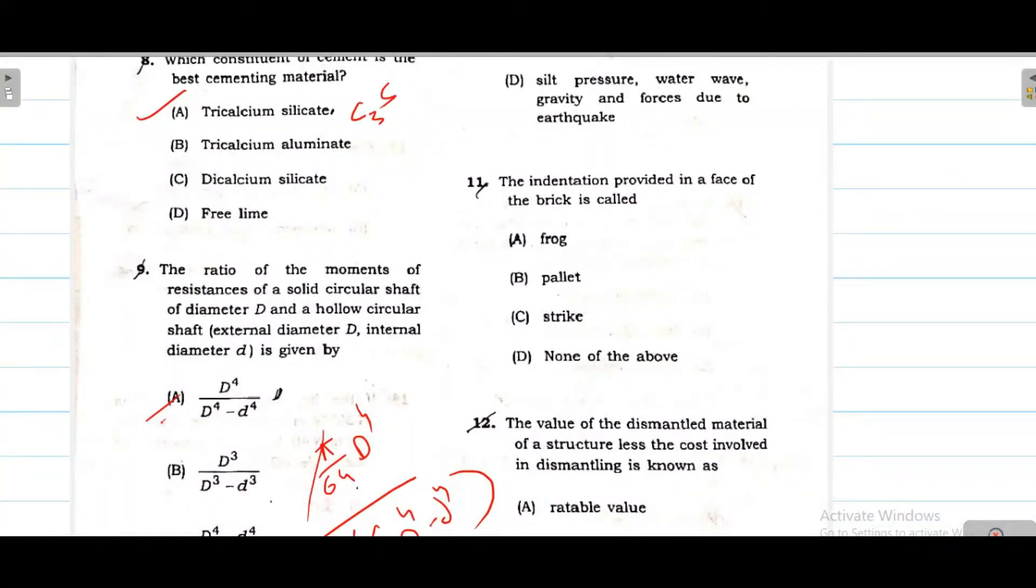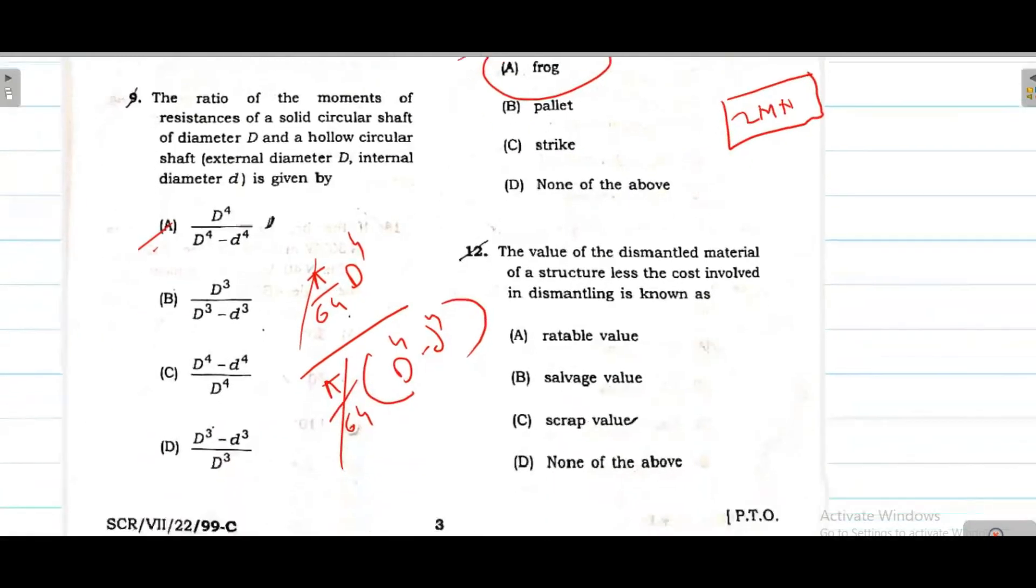Indentation provided on the face of the brick. On the brick's top face, the manufacturer name is written. This is my brick - manufacturer name is written like L, M, N. So this part is called frog. Frog is where the manufacturer name or logo is written. The main function is binding the two bricks together because of this gap. That is called frog.